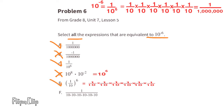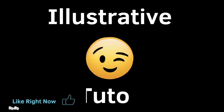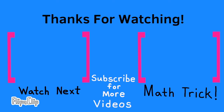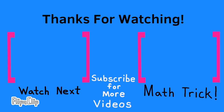Answer E is (one-tenth) to the power of 6, which equals one-tenth multiplied by itself six times — the same as one over a million. So we select E. Answer F is also one over ten multiplied by itself six times, which equals one over a million, so we select F. Be sure to support my YouTube channel by liking, commenting, and subscribing. Thanks for watching!